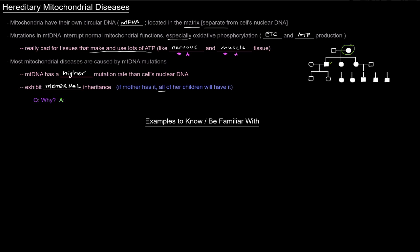Affected males do not pass on the disease, but affected females pass it on to all of their children. So why is this? Why do mitochondrial diseases exhibit maternal inheritance?